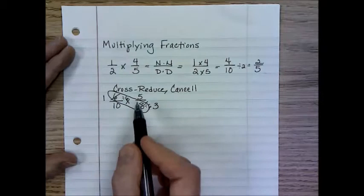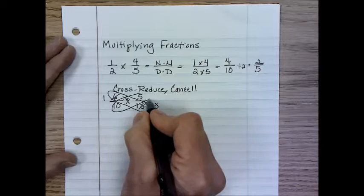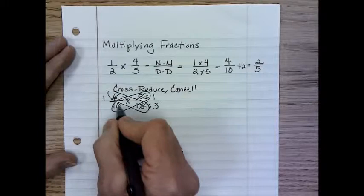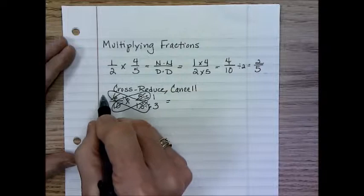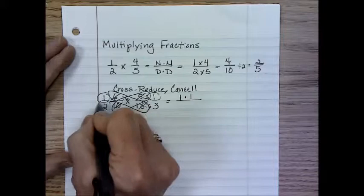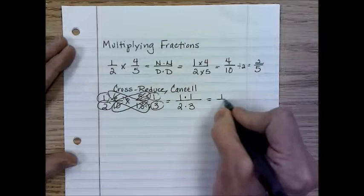Do five and ten have a common factor? Yes, they do. We can divide both of those by five. Five divided by five would now be one. Ten divided by five would be two. So now, what we're really doing is taking our one here and our one. So one times one, and now we have a two and a three in the denominator. Two times three, and that would be one-sixth.